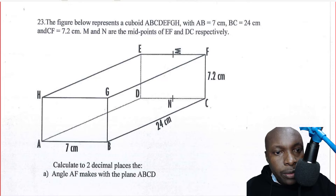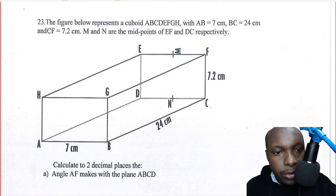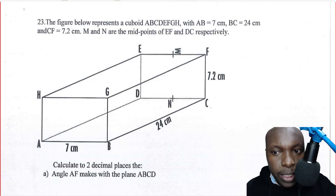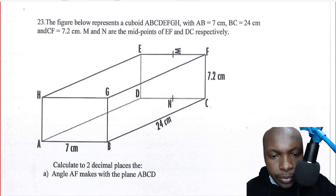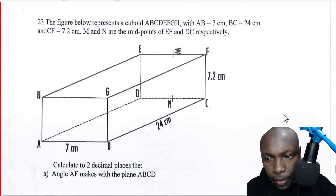Hello viewers and welcome to the lesson. Let us solve this question on three-dimensional geometry. The figure below represents cuboid ABCDEFGH with AB equals 7 centimeters, BC equals 24 centimeters, and CF equals 7.2 centimeters. M and N are the midpoints of EF and DC respectively.